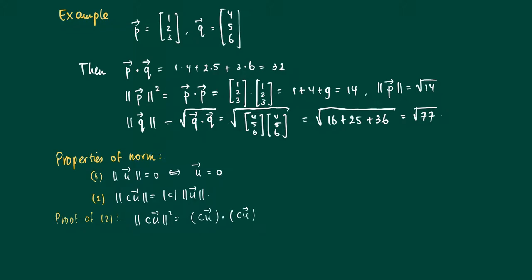Now we use the property that we can take these scalars outside, so we get one times c taken outside, and then we rearrange these two vectors u and cu. We can take c outside again, and then we get c squared times the inner product of u with itself, so it's c squared times the length of u squared.